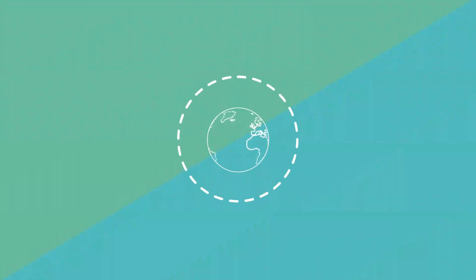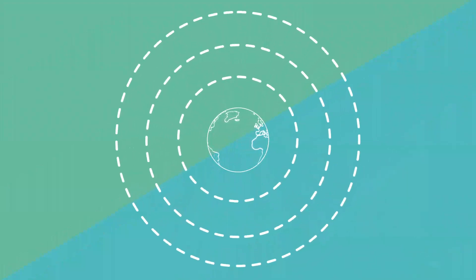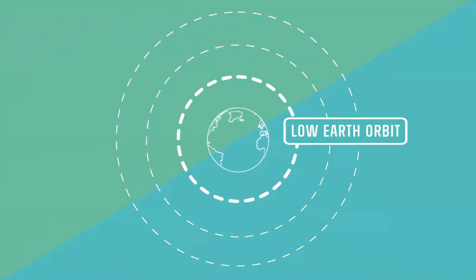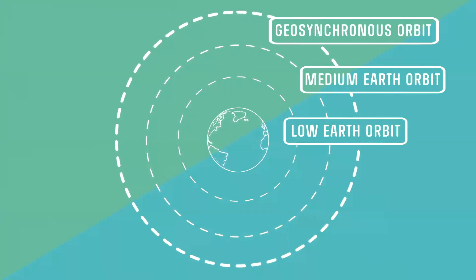There are three main rings of orbit around Earth: Low Earth orbit, medium Earth orbit, and geosynchronous orbit.